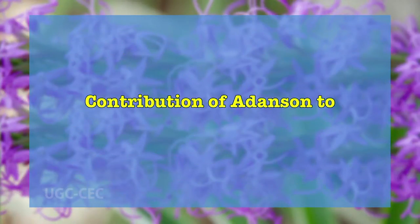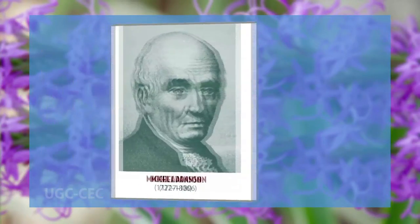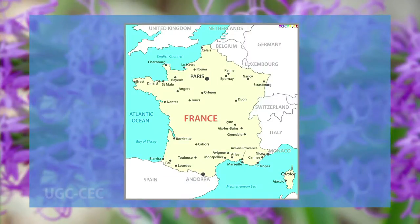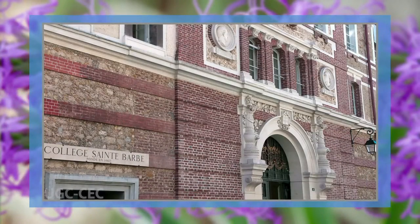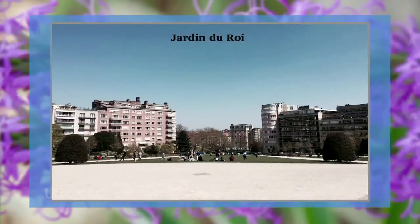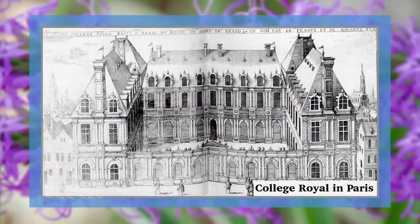First of all, we will discuss the contribution of Adanson to plant systematics. Michel Adanson, a French naturalist, was born at Aix-en-Provence on 7th April 1727. His family moved to Paris in 1730. After completing his education at Collège Saint-Barbe, he was employed in the Jardin des Plantes, Paris. He attended lectures at the Jardin du Roi and the Collège Royal in Paris from 1741 to 1746.